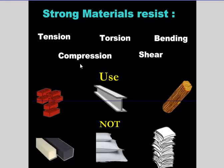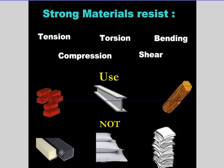Here's what strong materials resist: tension, torsion, bending — you take metal, bricks, and wood, you can't really bend them. You can't compress them very well; they don't squish. They stay within their structure; they don't change shape. And they don't shear, which means you can't rip them. These materials are not going to be very strong: a sponge — you can squish it, stretch it, compress it, bend it, rip or shear it. Same with a pillow and paper. So those things are not strong materials.